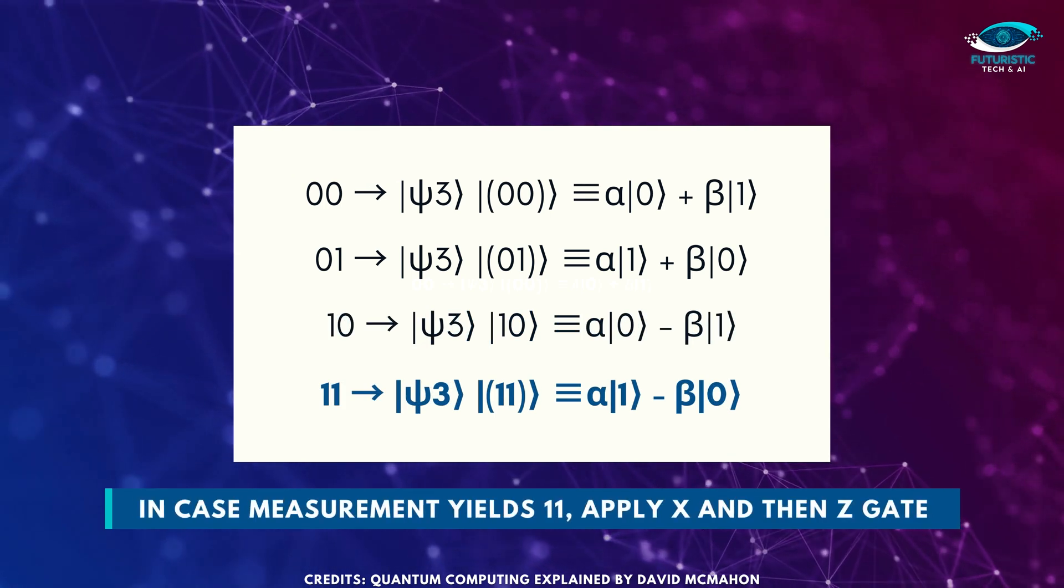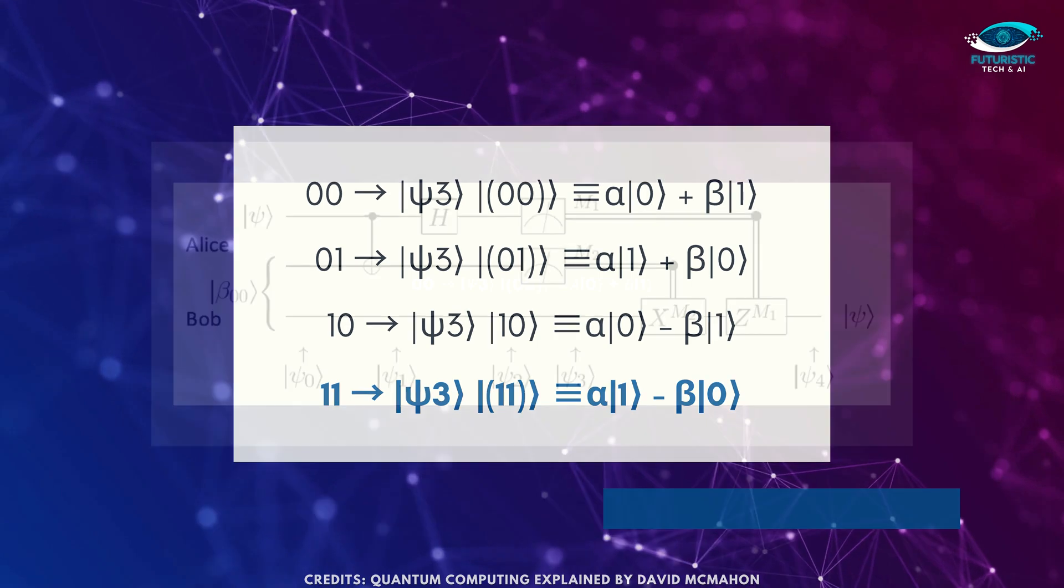If the measurement is one, one, then Bob can fix up his state by applying first an X and then a Z gate.